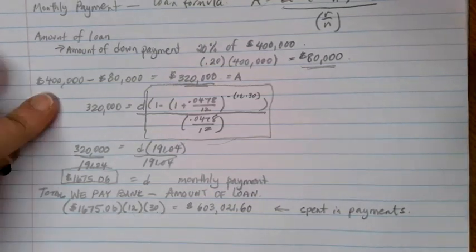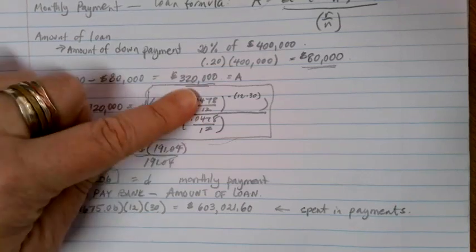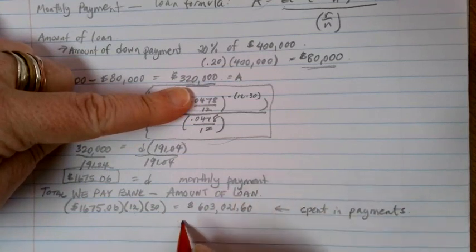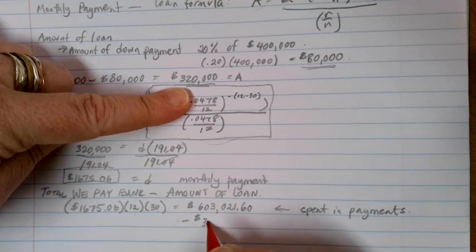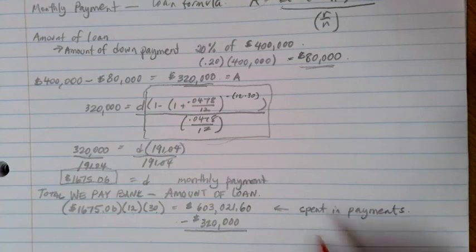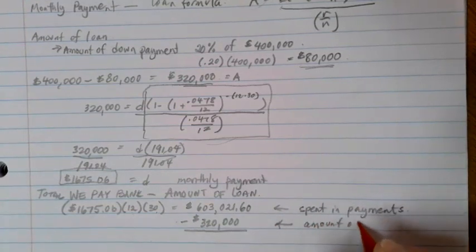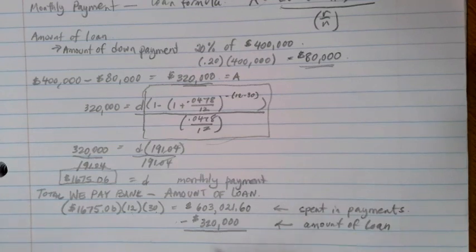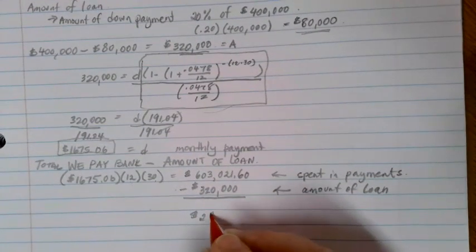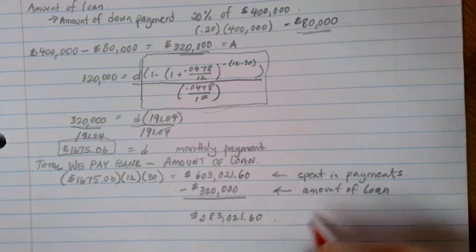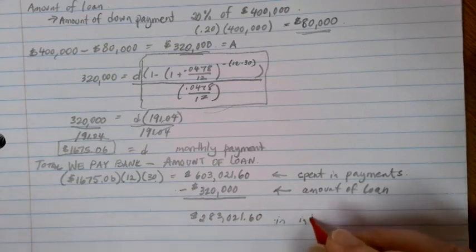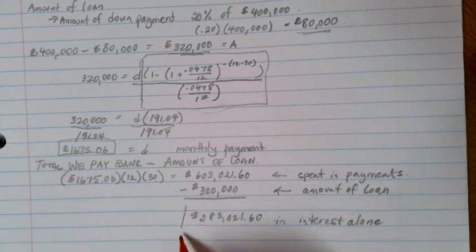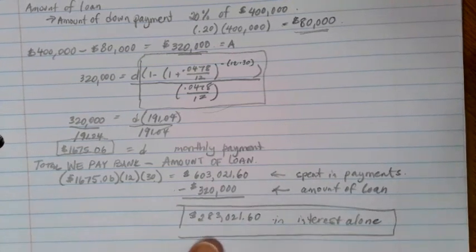Now, how much did I actually borrow? Well, I bought a $400,000 house, but that's not how much I actually borrowed. Technically, I only borrowed $320,000. So I need to subtract $320,000 here to figure out the total amount of interest. So if I do that $603,021.60 and I subtract $320,000, I end up with $283,021.60 in interest alone. So this is the total amount of interest that I paid for the house.